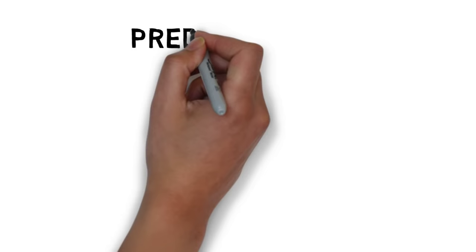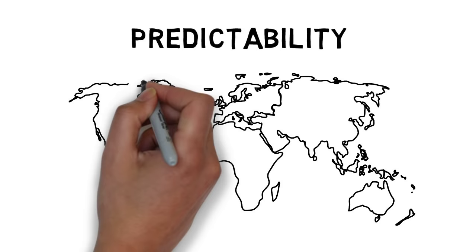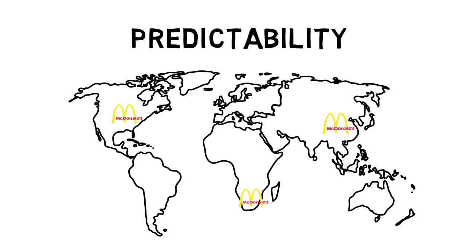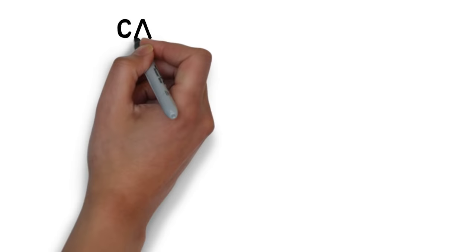The second element is predictability. We love what is familiar. And just like the McDonald's where you live, you expect a McDonald's in another city or country to have either the same menu items and atmosphere, or at least something close to it.